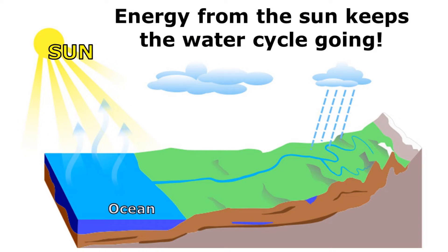Energy from the sun keeps the water cycle going. That's because energy from the sun causes water to evaporate. That water vapor goes up into the air, and through the process of condensation turns into a cloud.